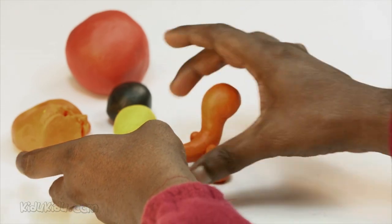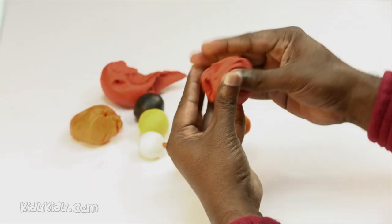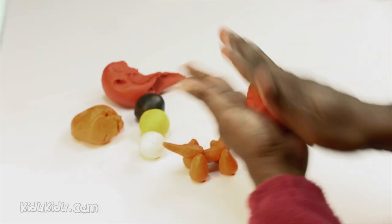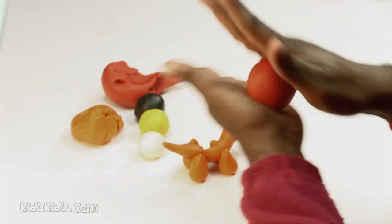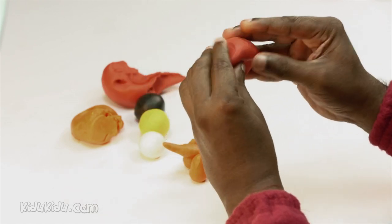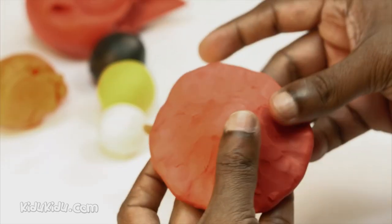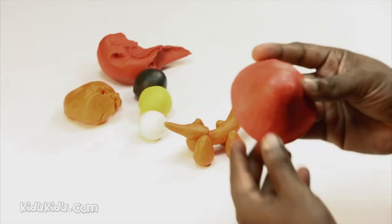Okay, it's now time for the shell. This is easy. Let's make the tortoise a red shell. Take a piece from the red ball and flatten it, then bend the flattened disc over the body like a hat.